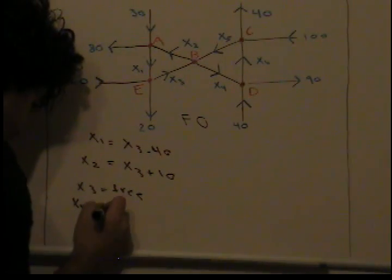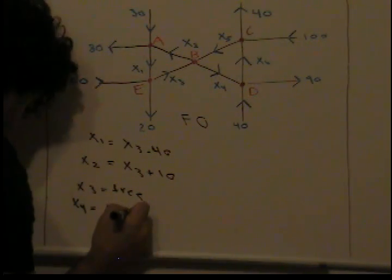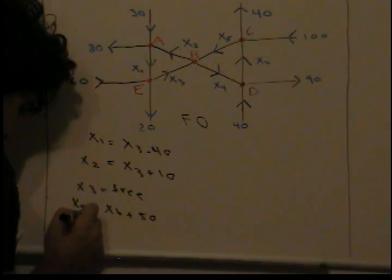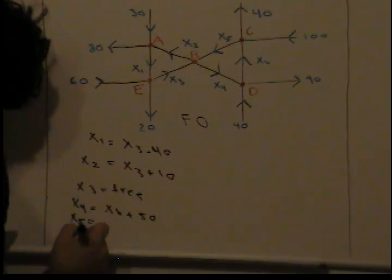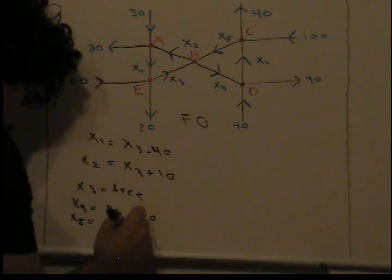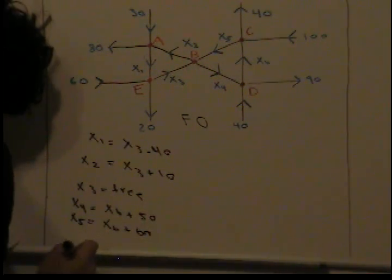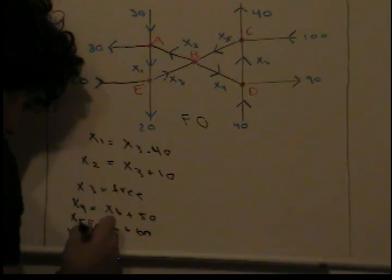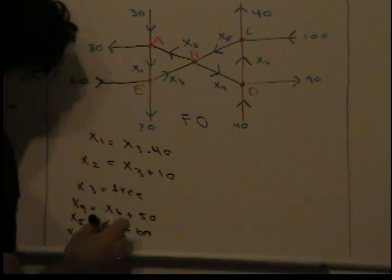x4 is x6 plus 50. x5 is x6 plus 60. And finally, x6 is free. It's a free variable, linearly independent.